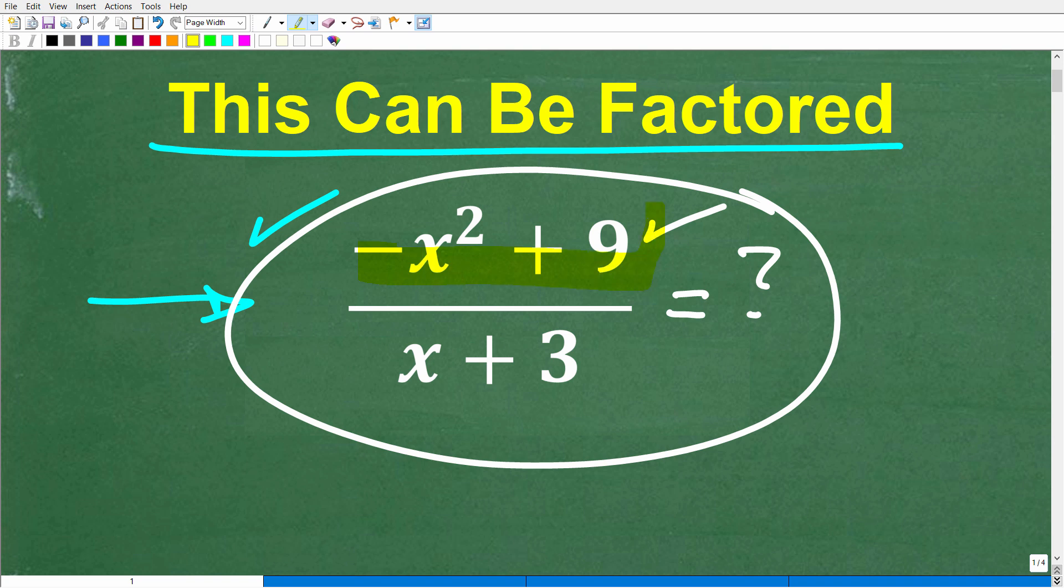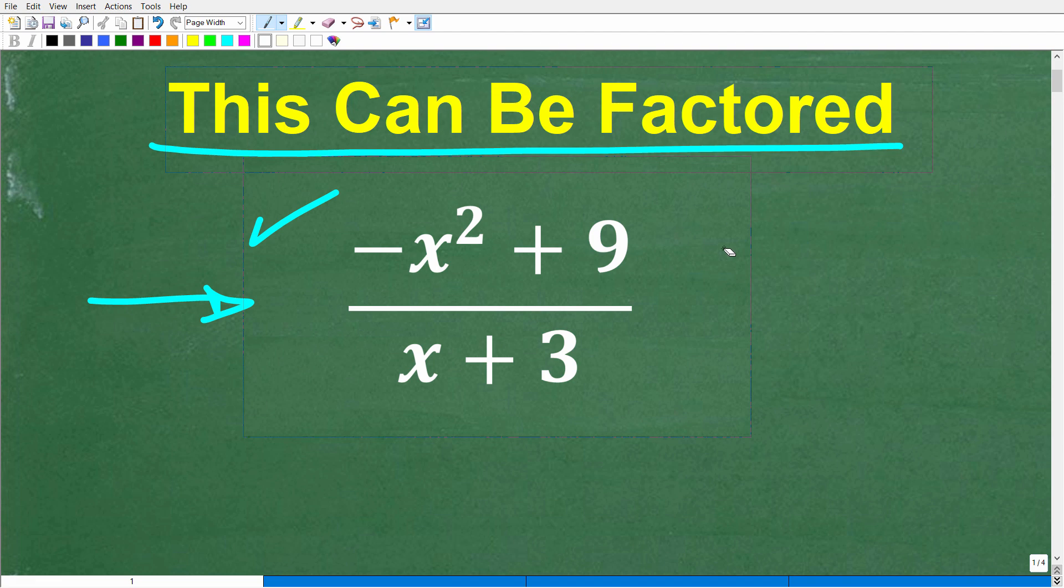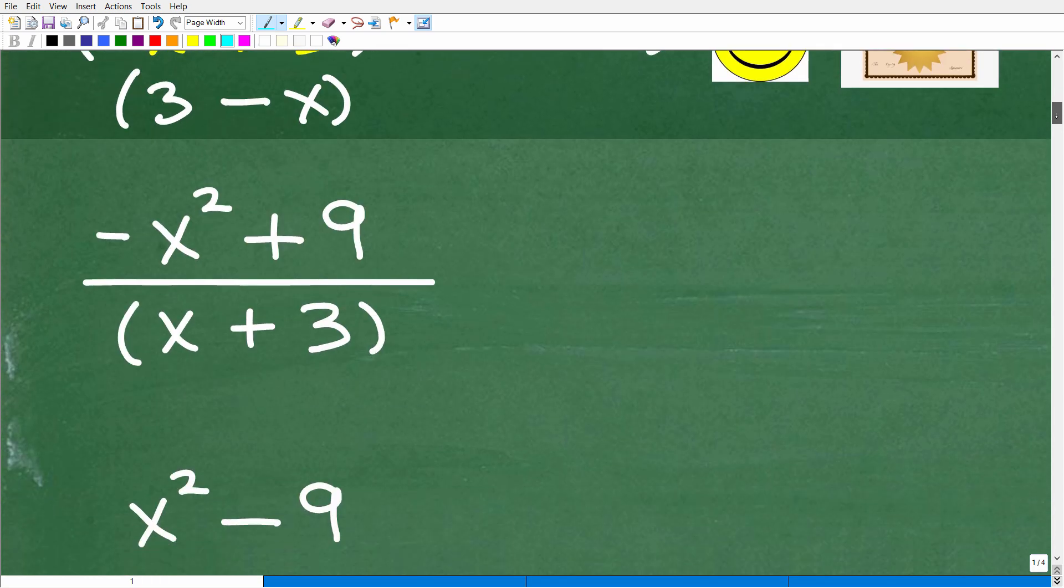This is the part of the problem where a lot of students are going to get stuck. This is a rational expression, which is effectively a polynomial in the numerator and denominator—a very common type of problem that those studying algebra will need to know how to do. Let's get into the solution right now.